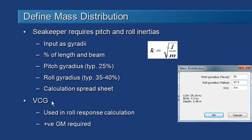You also need to enter in some mass information: the centre of gravity and its vertical location. That's used in the response calculation, so that's very important. And it is important that the VCG you enter does give you a positive GM so that the vessel is stable.